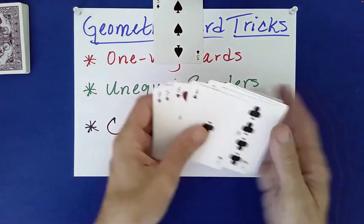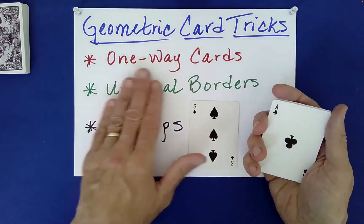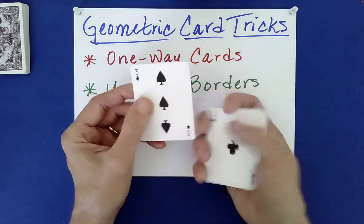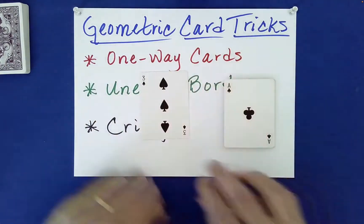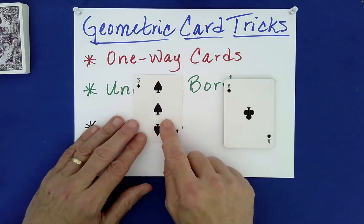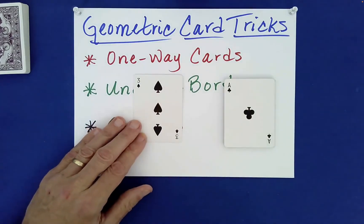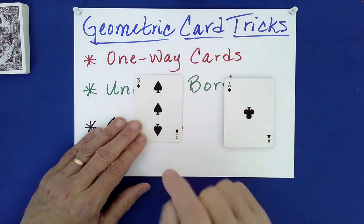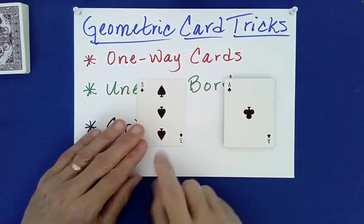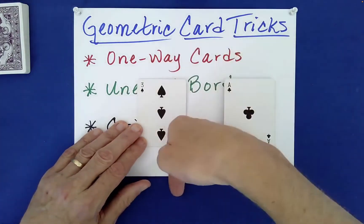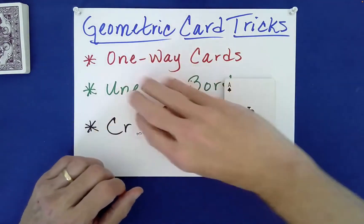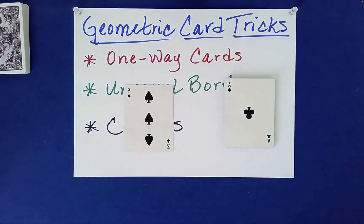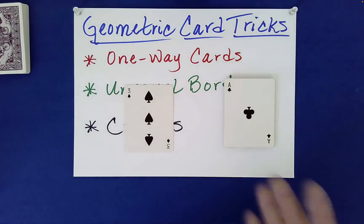What we're going to talk about first are called one-way cards. This is a geometric feature of cards. Focus on the card you actually chose — the three of spades. Look at these little spades: two of them are pointing that way and only one this way. And if you turn it over, it's the opposite — two pointing this way and one pointing up. This is an example of a one-way card. Depending on how you orient it, it can technically be discerned as different from the other orientation.